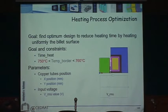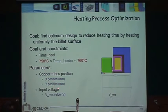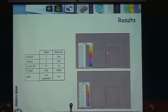Heating process optimization: we want to shape the induction coil so the surface temperature of the load is uniformly between 750°C and 760°C, while limiting the heating time. The initial coil only heated a small region. The optimized coil was moved slightly lower with a reduced air gap, giving a much more uniform temperature distribution across the surface.